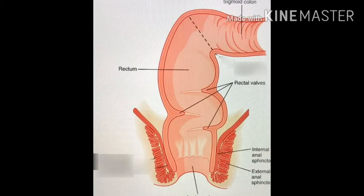Due to the assimilation process, the absorbed food is utilized for the growth and development of the body and for the formation of new cells. From the ileum, the food comes to the large intestine.